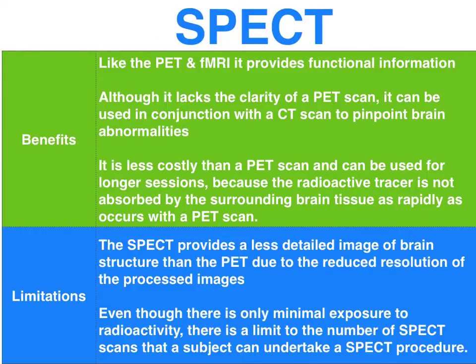In terms of the benefits, as opposed to a CT or an MRI which merely provides structural information, the SPECT provides structural and functional information. Although it lacks the clarity of a PET scan, it's often used in conjunction with a CT scan to detect and pinpoint brain abnormalities. In such a case, the CT would provide the detail in terms of structural information while the SPECT provides the functional information.